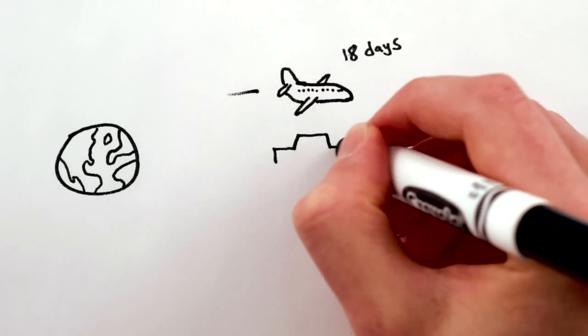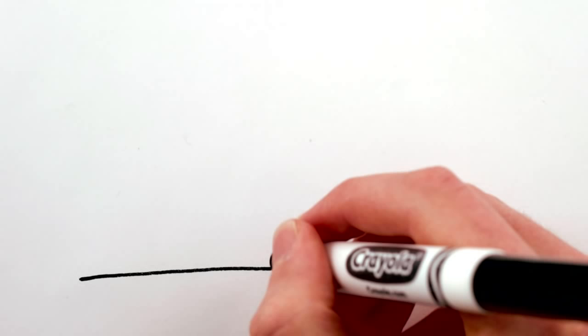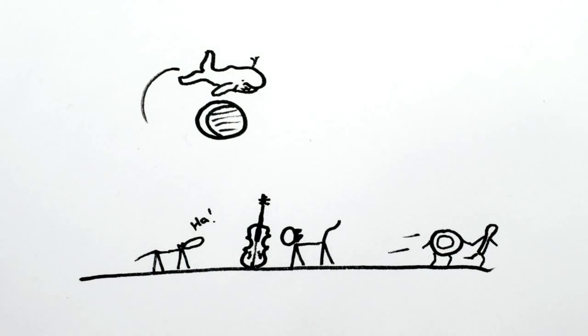On the other hand, the moon is 18 airplane days away, 6 car months away, and 15 whale years away. Which means, amazingly, that a whale might swim as far as the distance to the moon over the course of its lifetime.